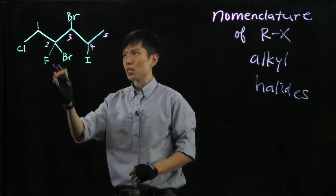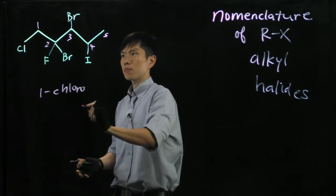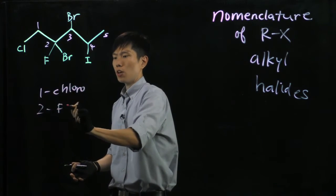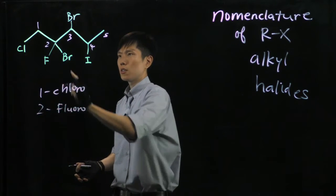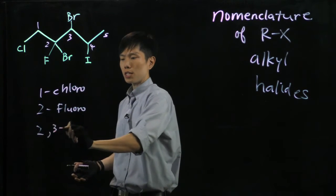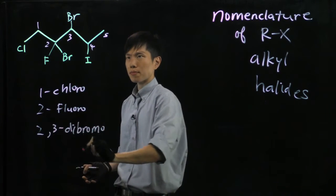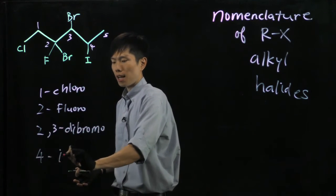We will list down the substituents here. 1, chloro. 2, fluoro. There is a 2-Br and a 3-Br. So 2, 3-dibromo. 4, iodo.